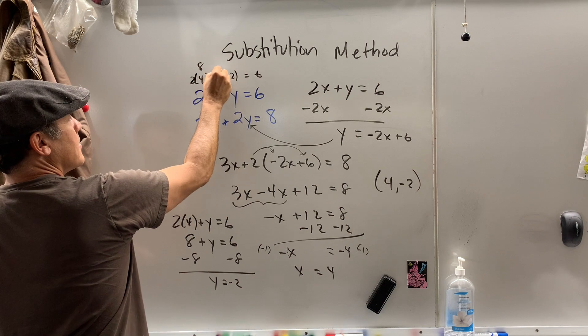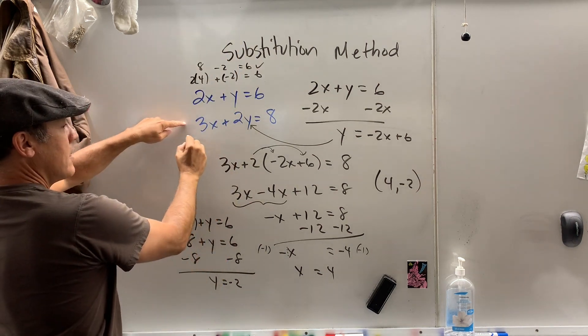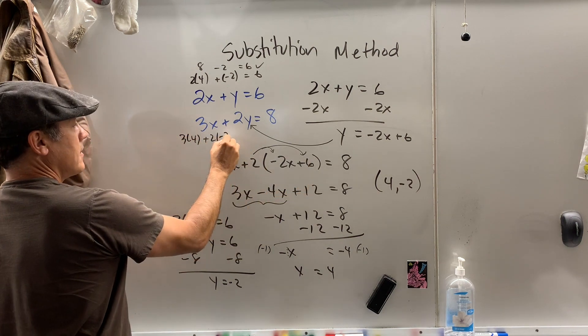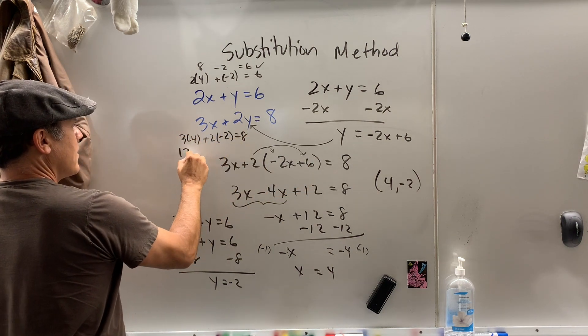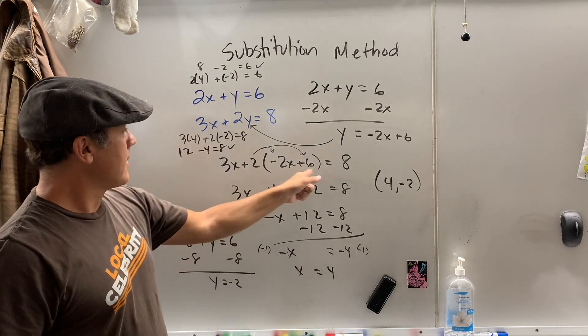Well, that's 8 minus 2 equals 6. Yep. And then right here, 3 times 4 plus 2 times negative 2 equals 8. 12 minus 4. Does it equal 8? It does. It works.